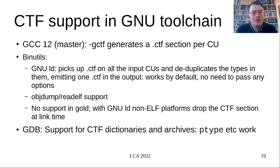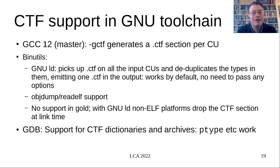What's the toolchain support like? It's in GCC 12 master — pass -gctf. It's in GNU-LD; you don't need to pass anything if there's CTF on the input — you get compressed, deduplicated CTF on the output. It's in objdump and readelf. It's not in gold yet. GNU-LD does not support non-ELF platforms with CTF at the moment. There's no support in LLVM yet, though people have been asking. People have also been asking for C++ support. In GDB, we support CTF dictionaries fully — ptype works, though quite a lot of GDB features don't work without Dwarf. GNU-Poke can read CTF. libabigail can take executables containing only CTF and do ABI analysis — meaning you can check ABI compatibility without installing any debug info at all, and even check ABI compatibility at runtime.